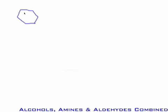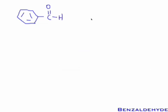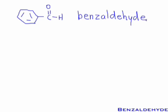What do you call a molecule that has a benzene ring with an aldehyde group off of it? Just as we learned phenol for OH and aniline for NH2, an aromatic benzene ring with an aldehyde group is given the special IUPAC name benzaldehyde — which, by the way, is also its common name: benzaldehyde.